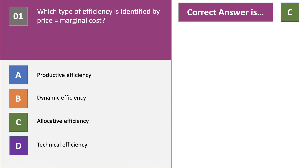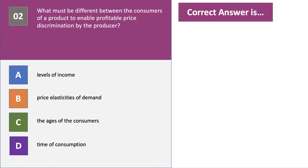Question number two. What must be different between the consumers of a product to enable profitable price discrimination by the producer? Press the pause button again please and have a go at question number two.